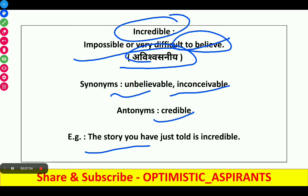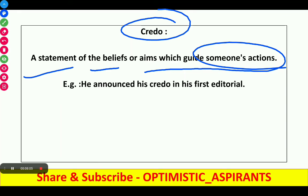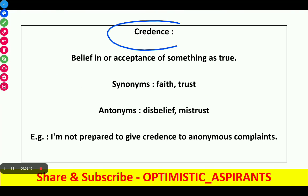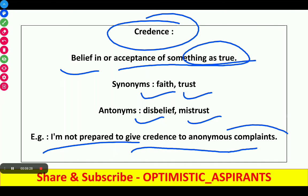Next word is credo. It is a statement of the beliefs or aims which guide someone's actions. Example: 'He announced his credo in his first editorial.' Next word is credence. It means belief in or acceptance of something as true. Synonyms are faith and trust. Antonyms are disbelief or mistrust. Example: 'I am not prepared to give credence to anonymous complaints.'